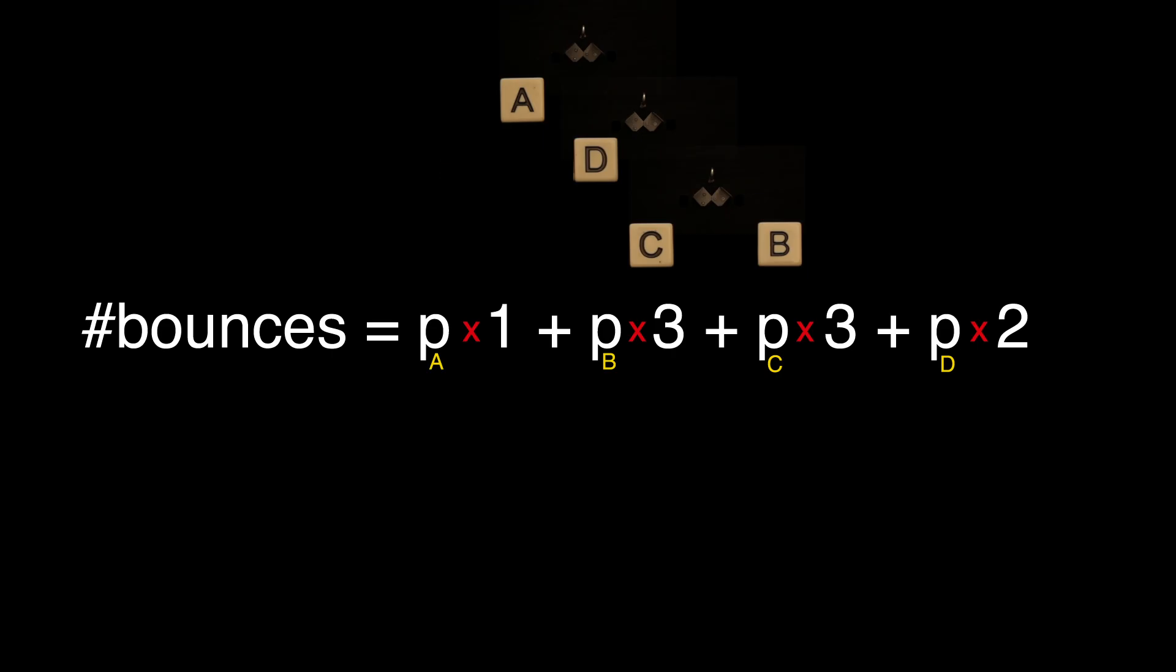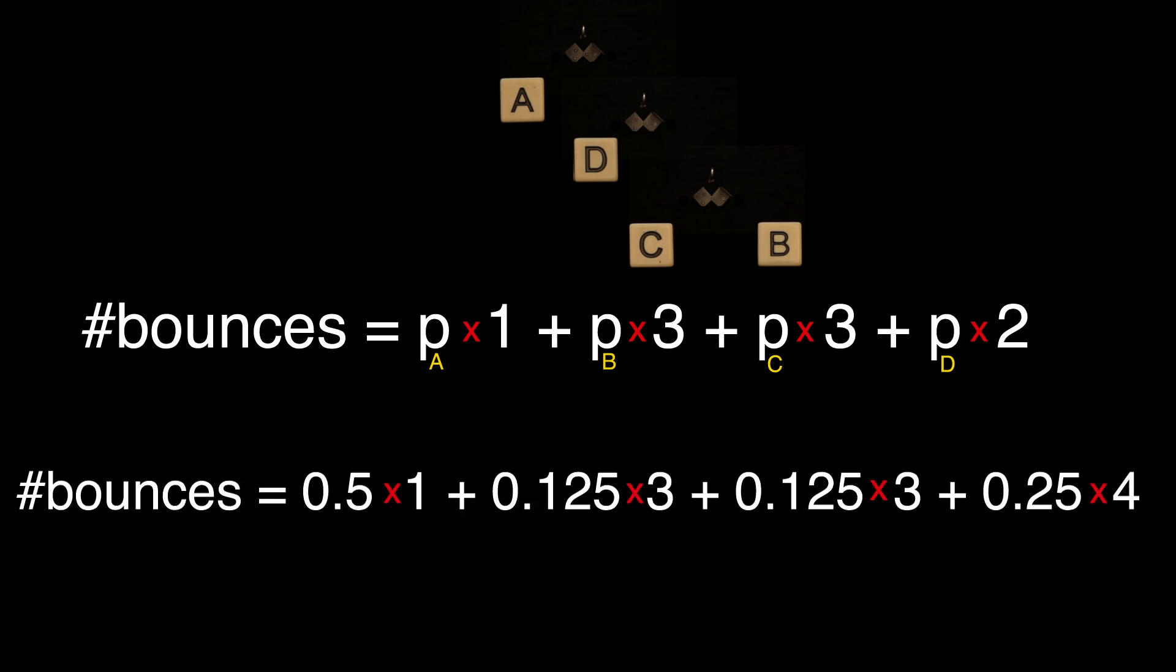So now we just take a weighted average as follows: the expected number of bounces is the probability of symbol A times one bounce, plus the probability of B times three bounces, plus the probability of C times three bounces, plus the probability of D times two bounces. And this works out to 1.75 bounces.